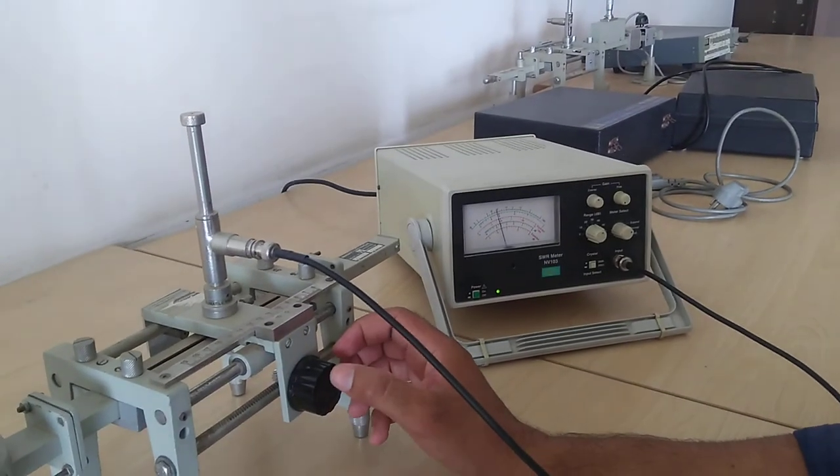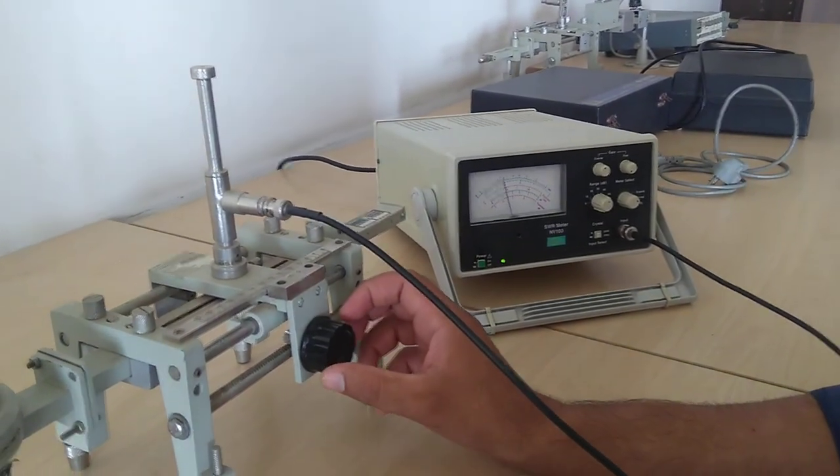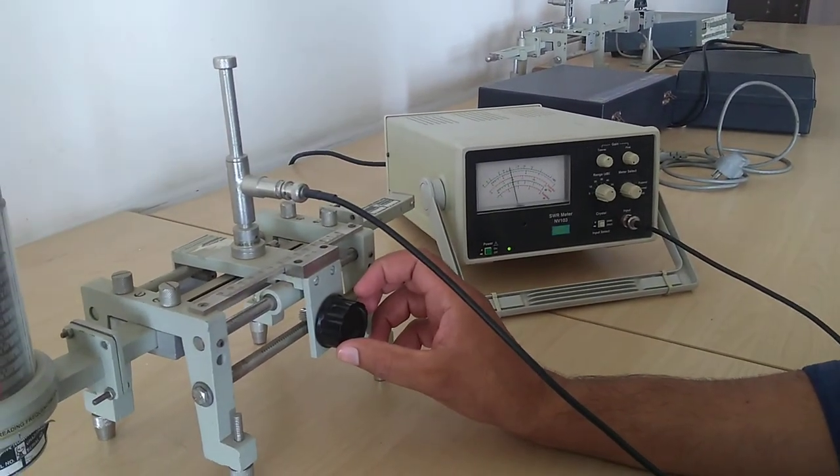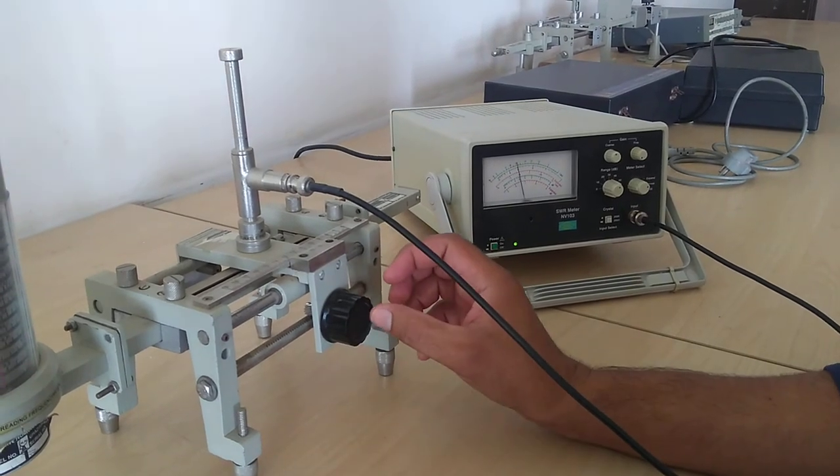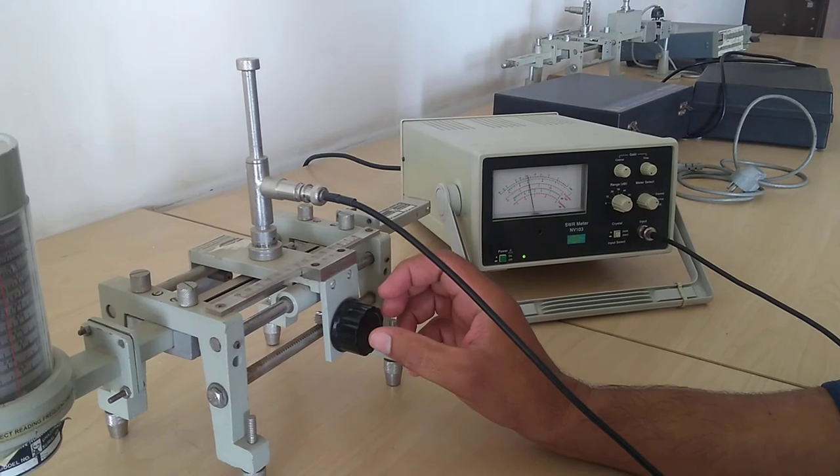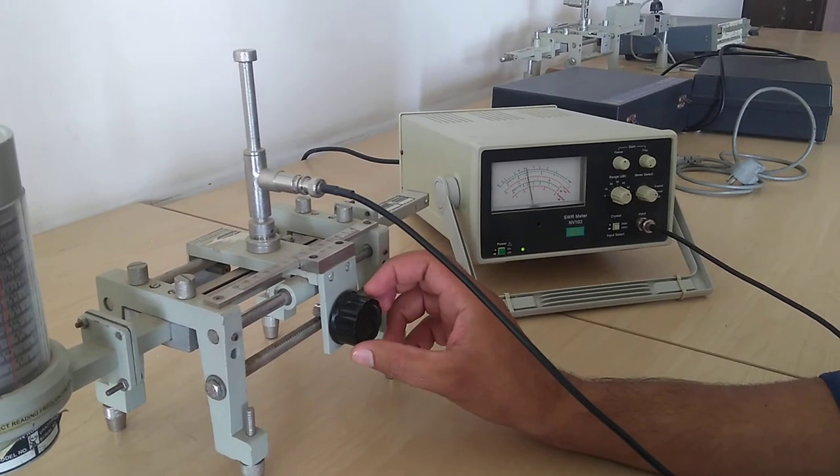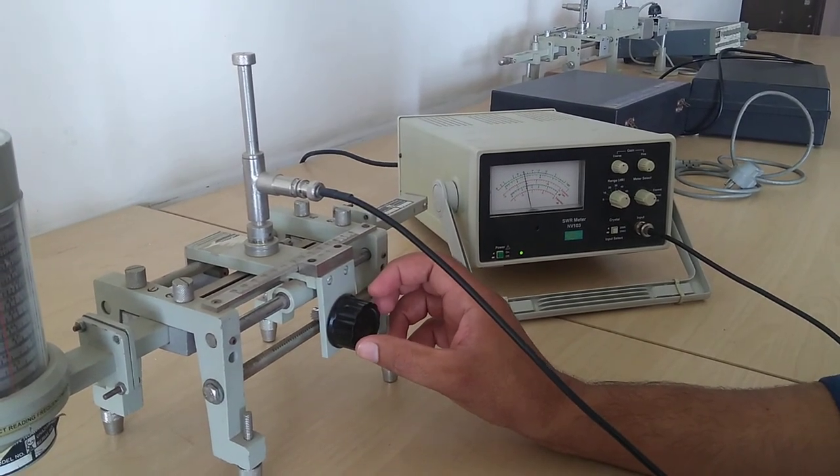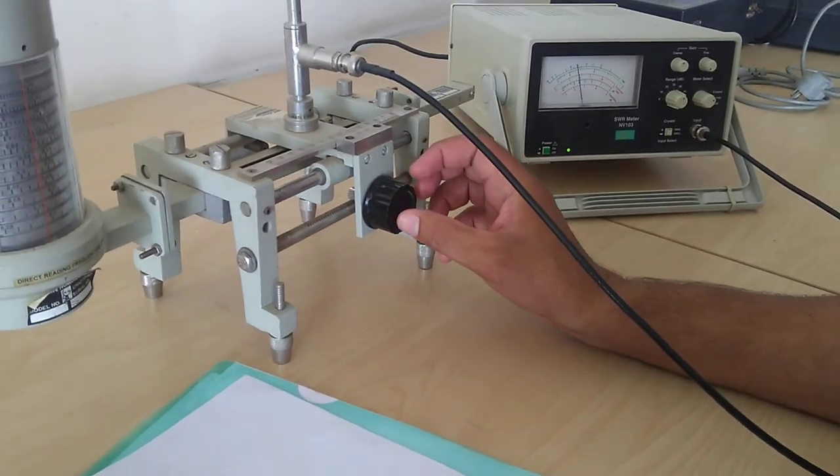The difference of two readings, d1 and d2, is used to calculate our wavelength of the signal. This is given by 2 times delta d equals lambda, involving some mathematical calculations.